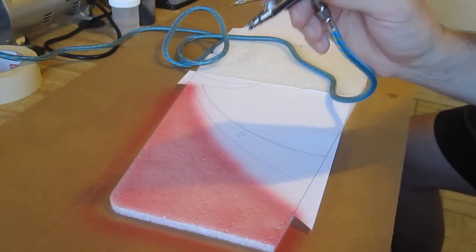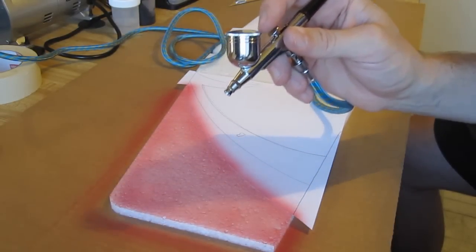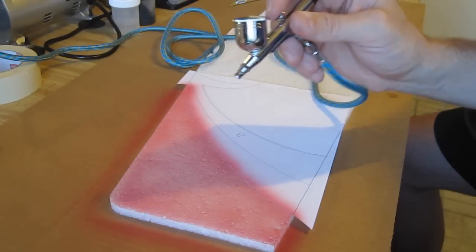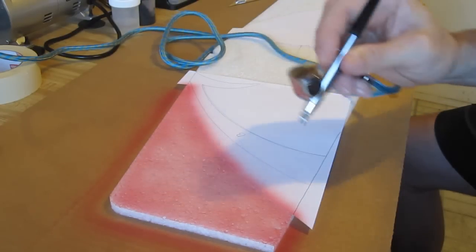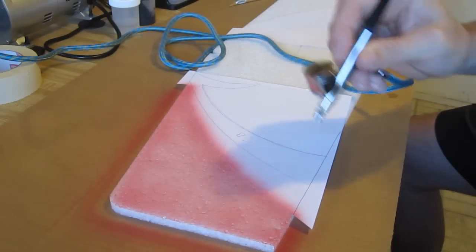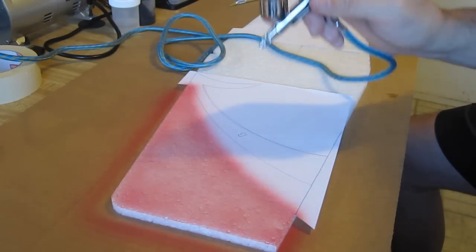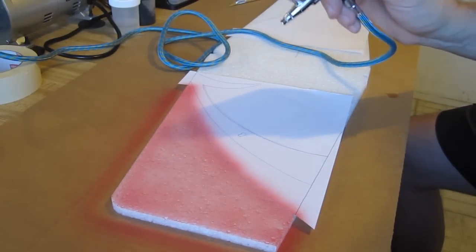Now one of the cool things about a dual action airbrush that I'm using here, if I just press down the button on the airbrush, no paint will come out. It's just air, so I can actually use that air to dry the paint a little bit between coats.